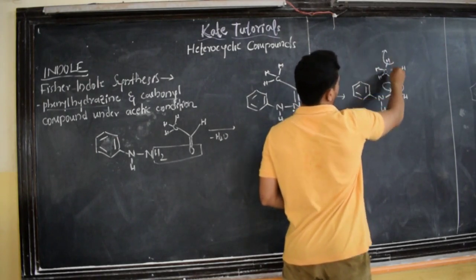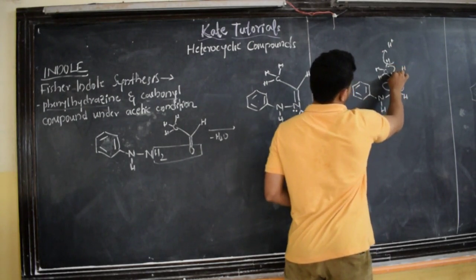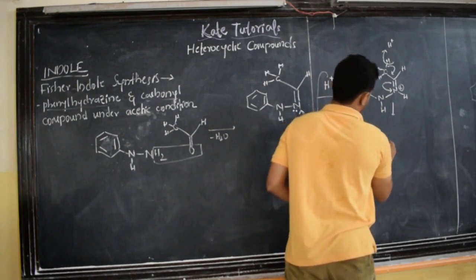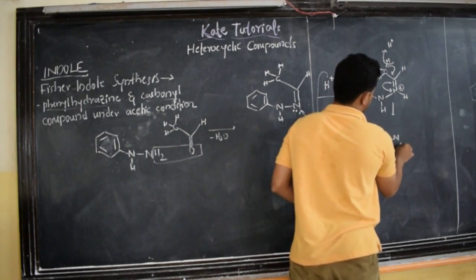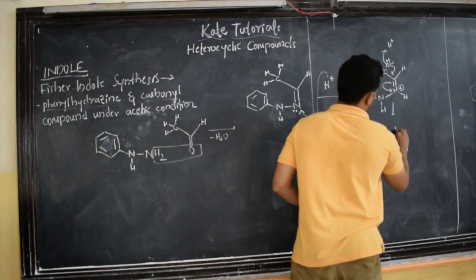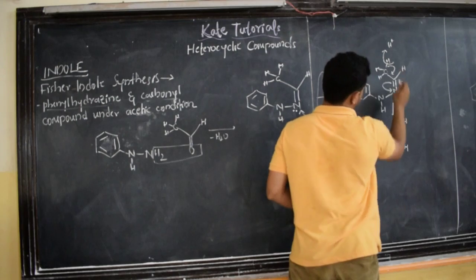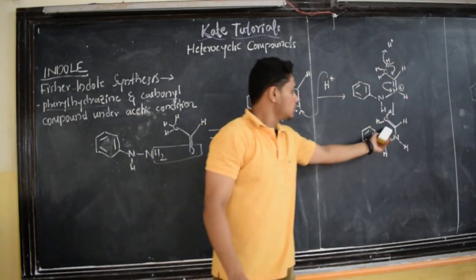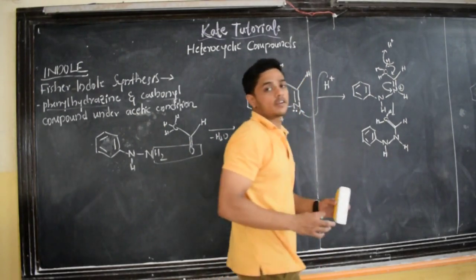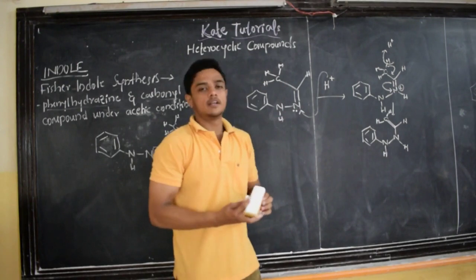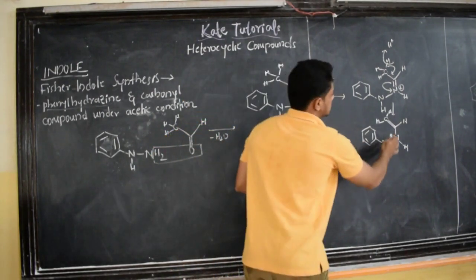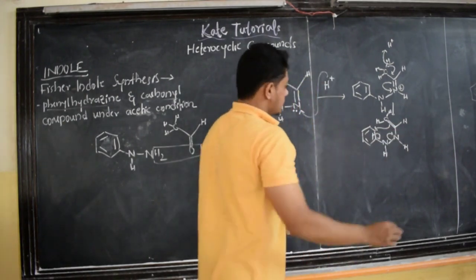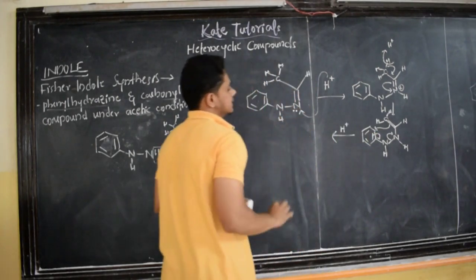Here we get a sigmatropic rearrangement, which we will study in pericyclic reactions. Just remember: the double bond shifts here, then here, then here, and then here again — a [3,3] sigmatropic shift along the chain.